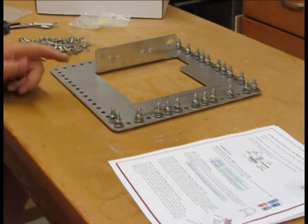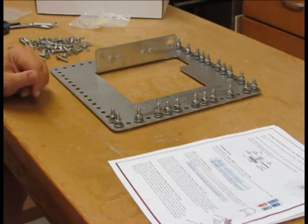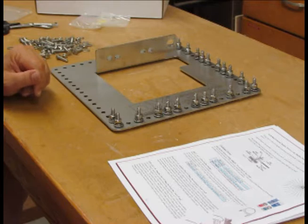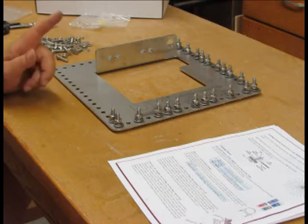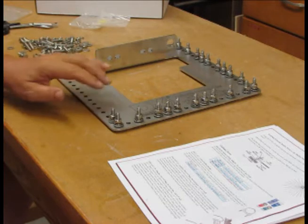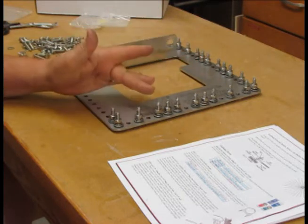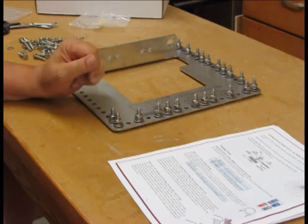Then of course that process is repeated around the perimeter of the plate. I'm planning on putting in 64 radials, so I'll be doubling up some of these locations with two wires per nut.